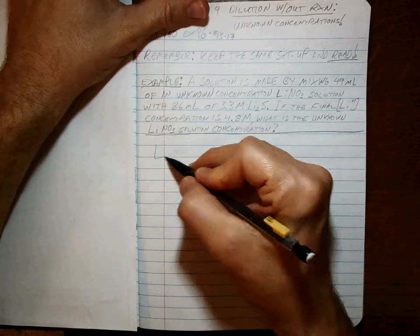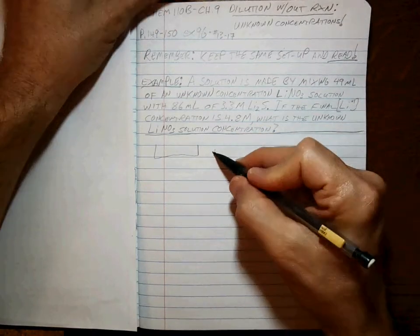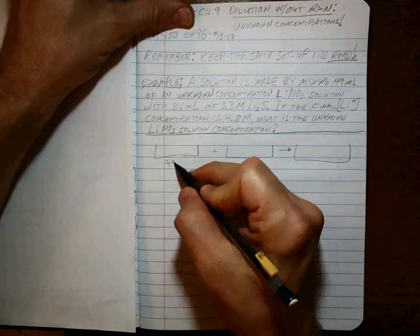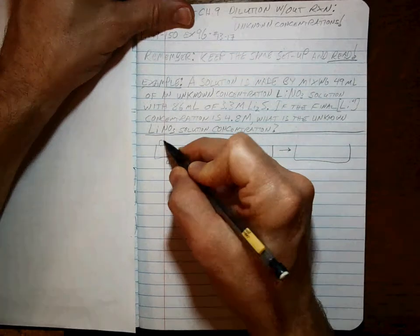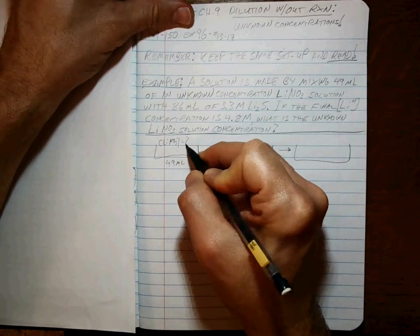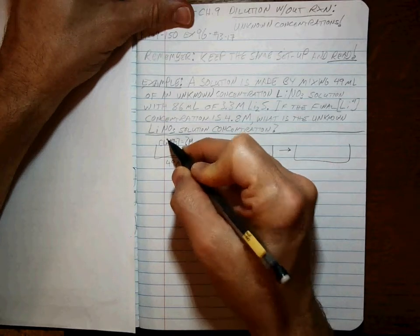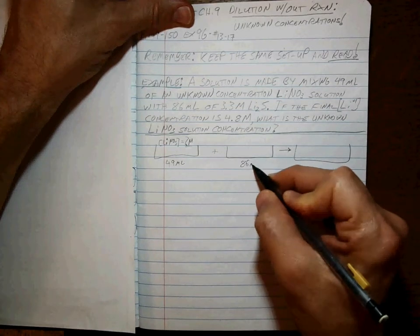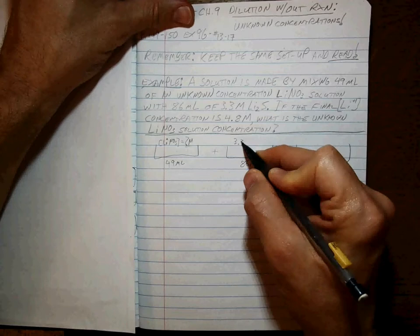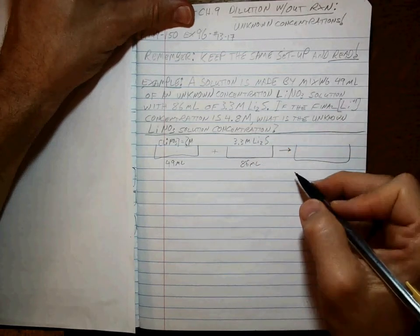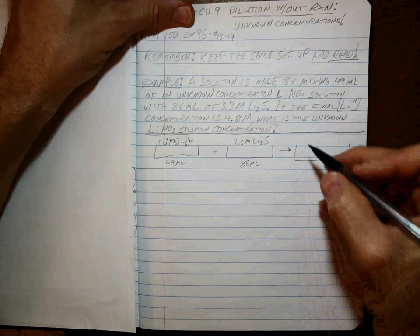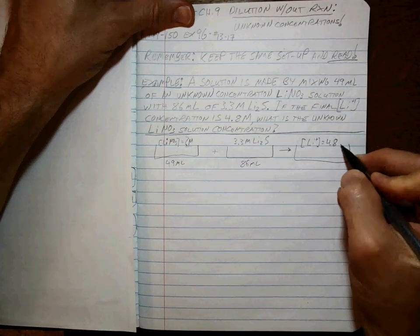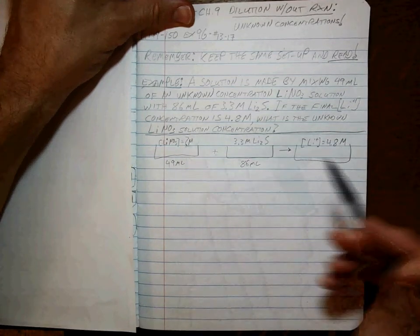Alright, we got beakers. We always got beakers. So what are they and what do they tell us? 49 milliliters of the lithium nitrate, of which we do not know what that concentration is. That's what we want to find out. Added to 86 milliliters of 3.3 molar lithium sulfide. They also tell us that at the end, the lithium ion concentration is 4.8 molar.